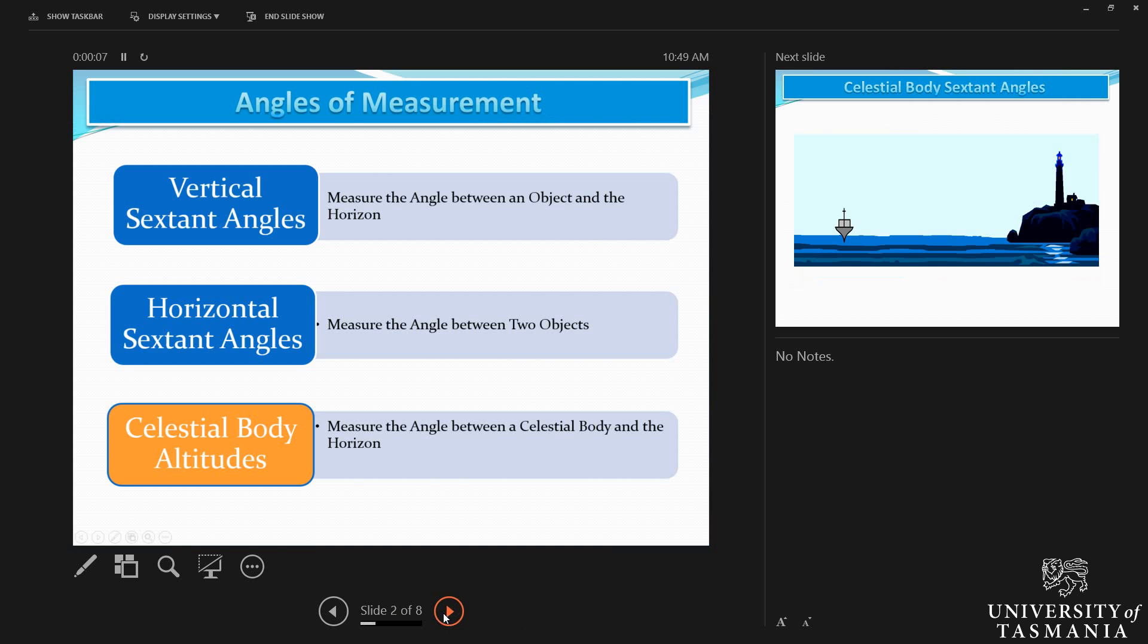Sextants can be used to measure different kinds of angles that include vertical sextant angles, horizontal sextant angles, as well as celestial body altitudes. The topic for today, we only focus on celestial body altitudes.